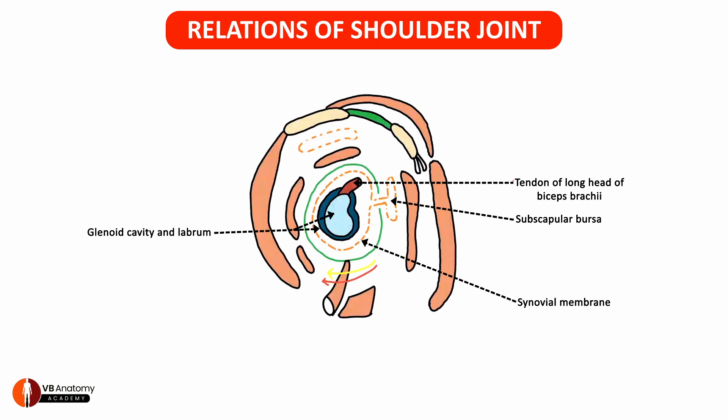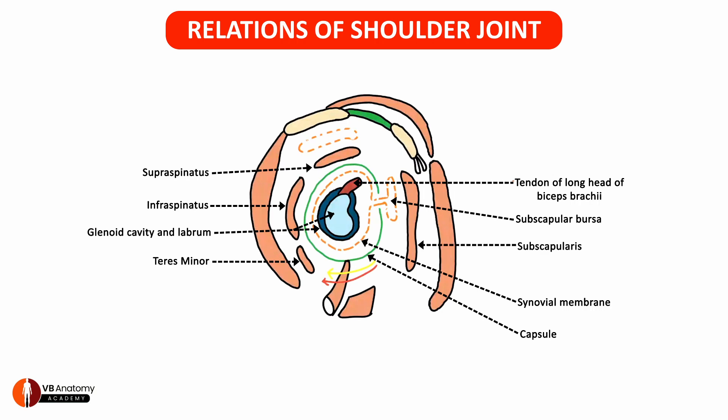The whole thing is surrounded by the capsule of the shoulder joint. The shoulder joint is superiorly related to the supraspinatus, posteriorly to the infraspinatus, and further posteriorly to the teres minor muscle. It is anteriorly related to the subscapularis, and together they form the rotator cuff muscles around the shoulder joint. Posteriorly, the shoulder joint is related to the deltoid muscle.